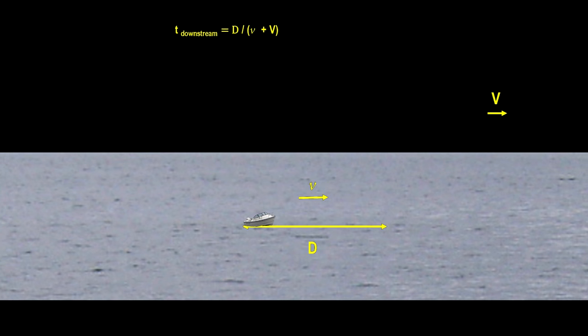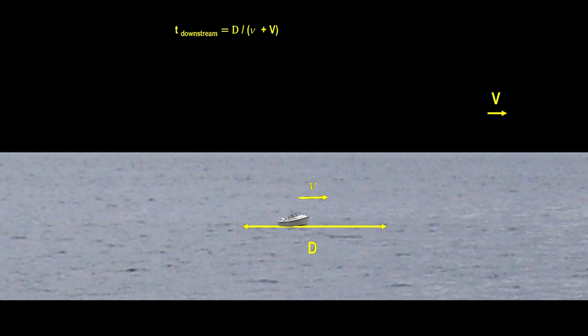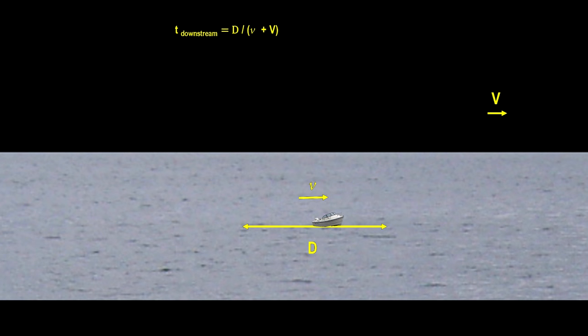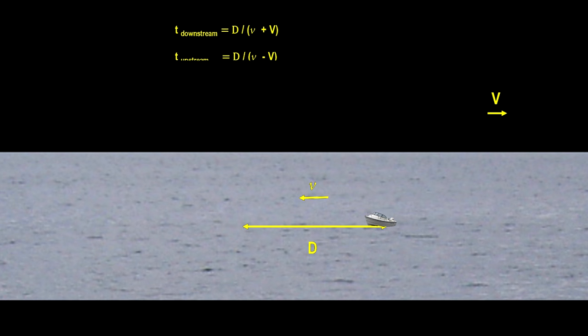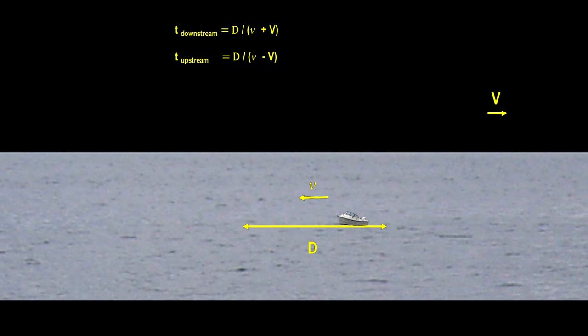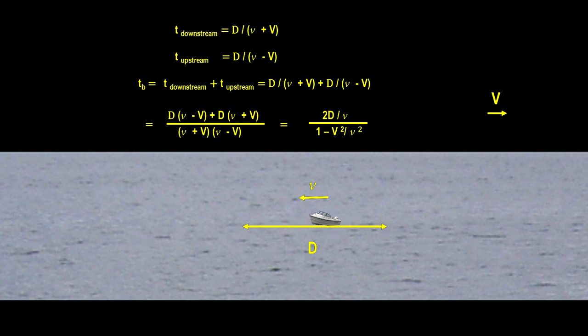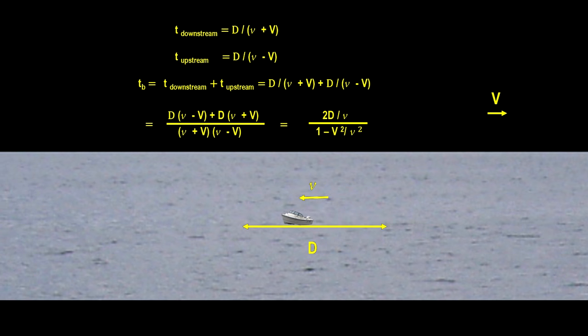Now let's take a look at the boat traveling down the river and back. The time it takes to go the distance d is simply d divided by the speed of the boat plus the speed of the river. The trip back takes d divided by the speed of the boat minus the speed of the river. Using the common denominator to add these two times gives us the time it takes to make this round trip.